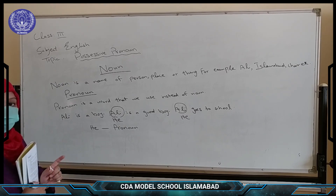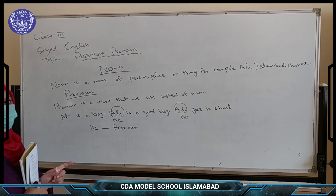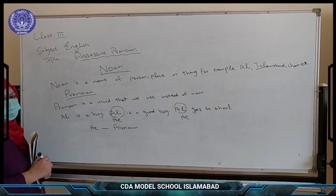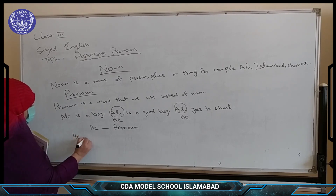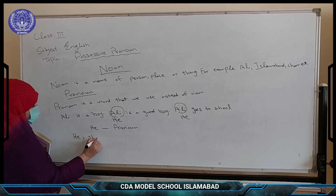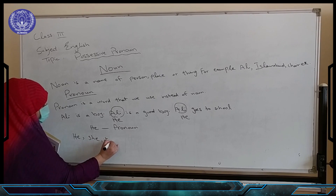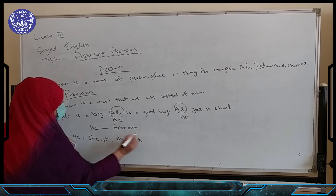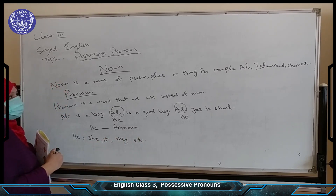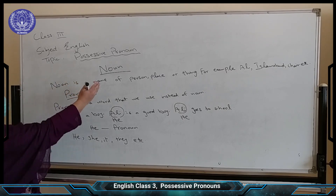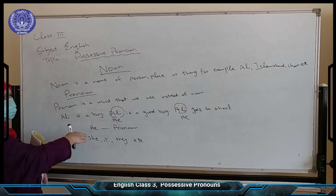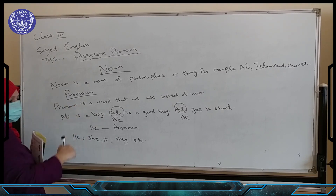I hope so that you have made this concept clear about the pronoun — that pronoun is a word that we use instead of noun. There are different pronouns, for example: he, she, it, they, etc. So we have revised now. Noun is the name of person, place or thing. Pronoun is a word that we use instead of noun.